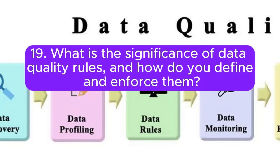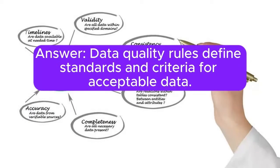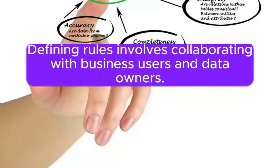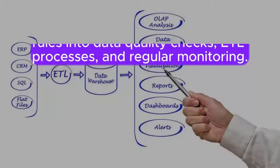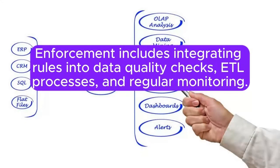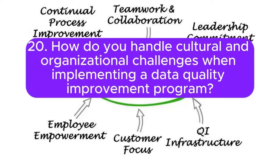19. What is the significance of data quality rules, and how do you define and enforce them? Answer: Data quality rules define standards and criteria for acceptable data. Defining rules involves collaborating with business users and data owners. Enforcement includes integrating rules into data quality checks, ETL processes, and regular monitoring.